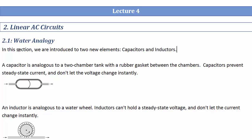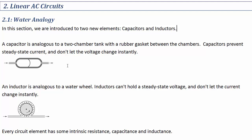Section 2.1, the water analogy. First, we're going to introduce capacitors and inductors. You guys already know what these things are, so this is going to be review. What we're going to do here is try and understand them at a deeper level. One way to look at a capacitor is analogous to a water tank. A capacitor is kind of like a two-chamber tank with a rubber gasket in the middle — you can't have steady-state current flowing through a capacitor. It stops that, but it doesn't really care about little short changes in the current. It just can't have a steady-state value for a long time.